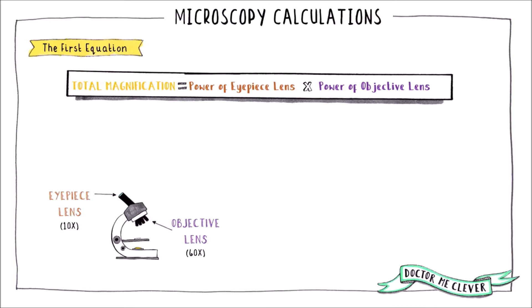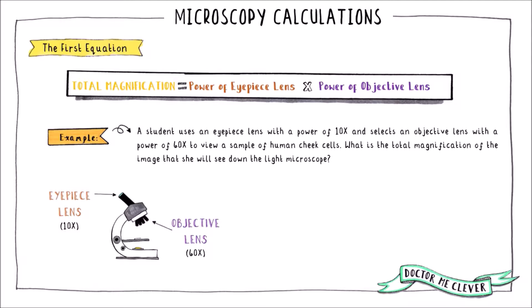Take this question for example. A student uses an eyepiece lens with a power of 10 times and selects an objective lens with the power of 60 times to view a sample of human cheek cells. What is the total magnification of the image that she will see down the microscope?